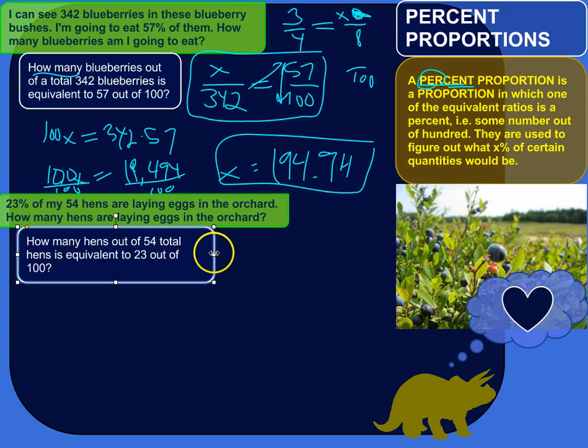That's what this question is asking us. How many hens out of a total of 54 hens is equivalent to 23 out of 100. So let's start doing our math.